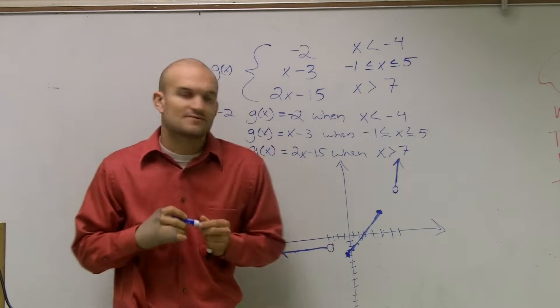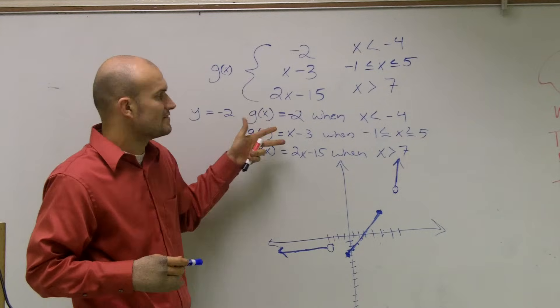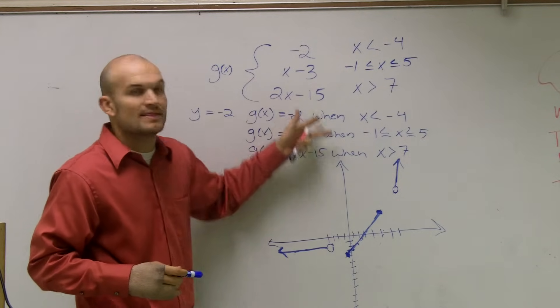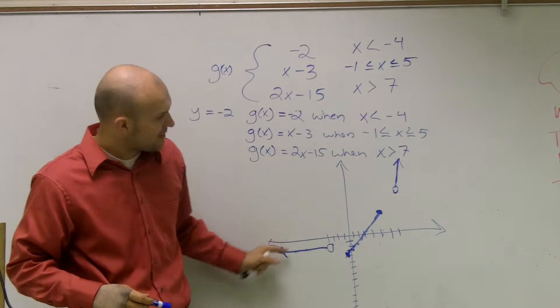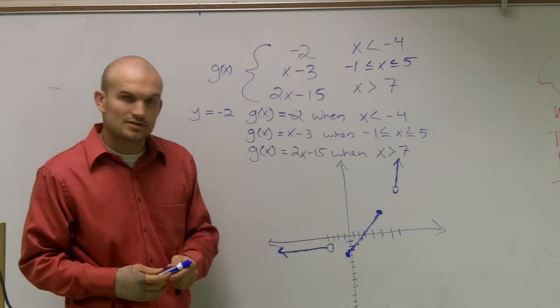So just remember when you're doing a piecewise function to take each one of your functions individually, graph them, and then use your constraints to graph the rest of the function. And when I put them all together, that's what it looks like.